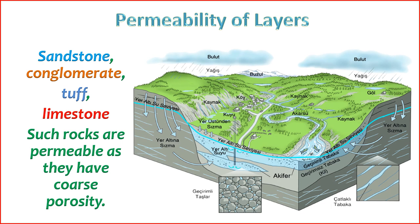Permeability is typically measured in units of Darcys. A higher permeability allows fluids to flow more easily through the rock, while a lower permeability restricts fluid movement. Understanding the permeability of rock layers is crucial in various fields, including groundwater management, oil and gas exploration, and environmental studies.